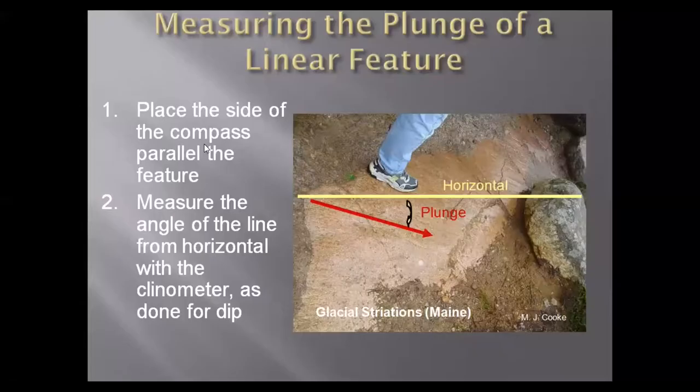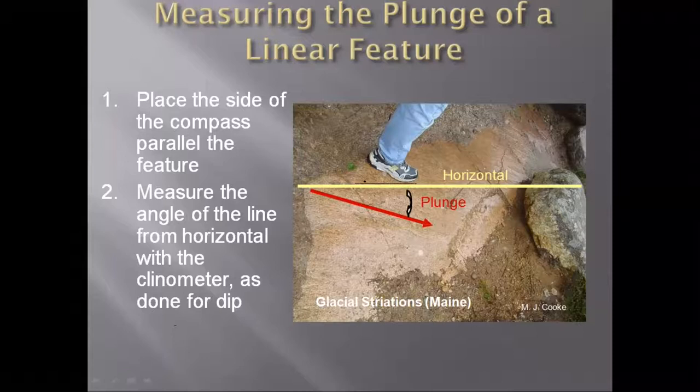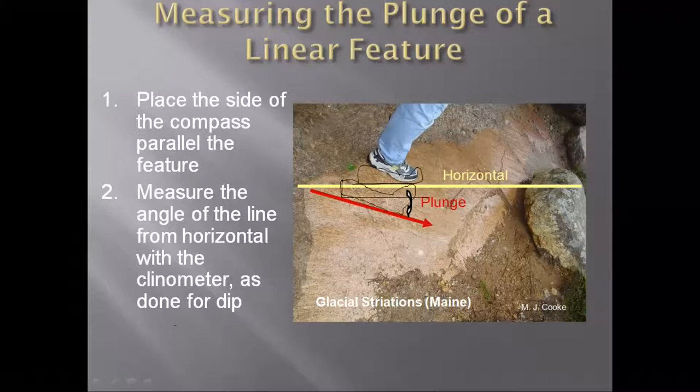The other important feature that we can measure with the Brunton is the measurement of the plunge. What you do is you just place the Brunton — you just place the side of the Brunton. For example, if this is your Brunton, you just place the side of the Brunton parallel to the feature. If this is the feature, then you will place this Brunton parallel to this feature and you will measure the same.